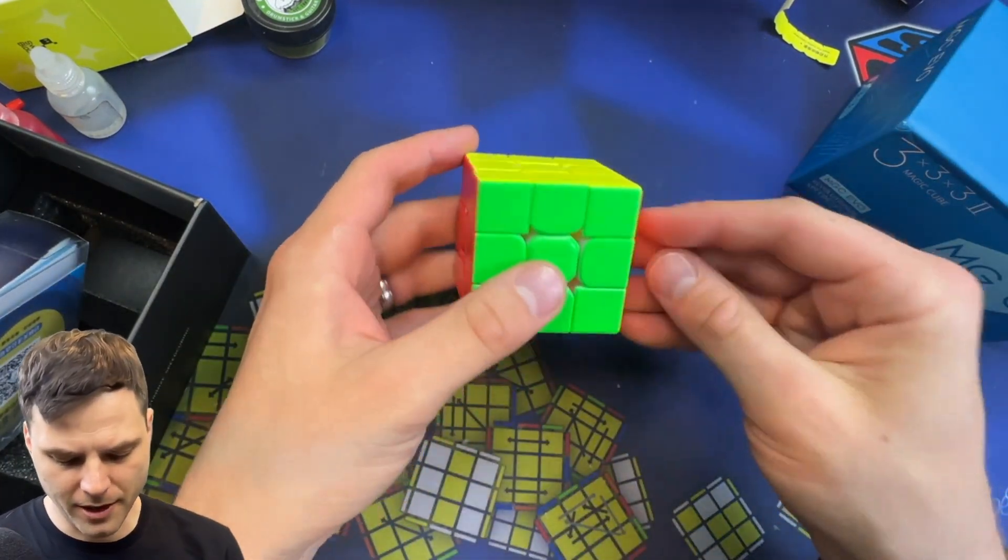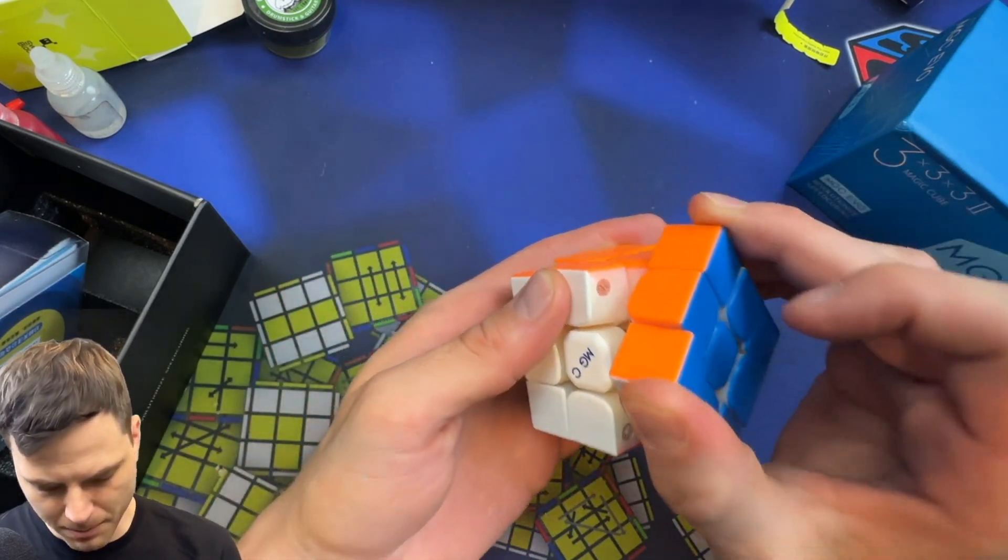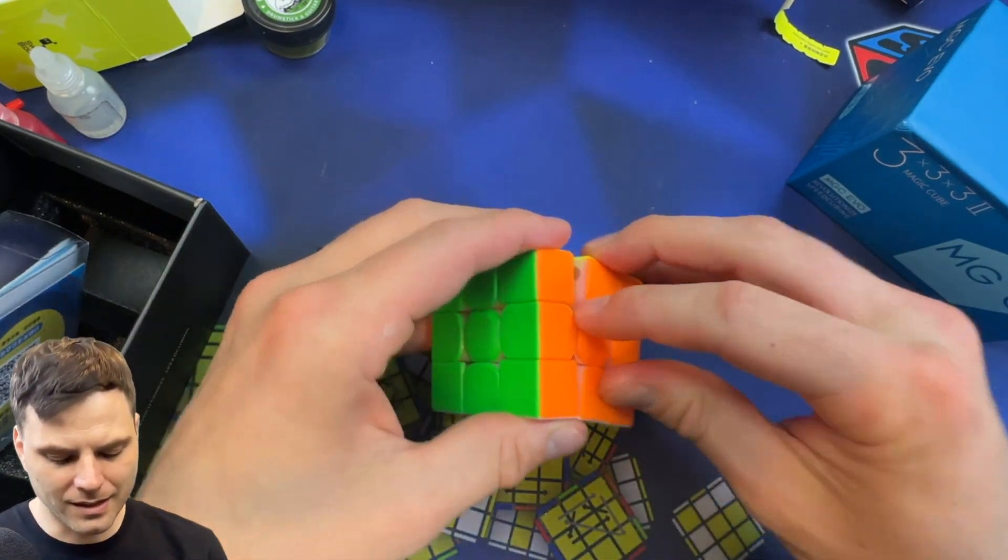Okay, right off the bat, a couple things. Matte plastic. Piece shape is pretty standard. We have magnet adjustment. Looks like six different adjustment settings. What's under the hood?